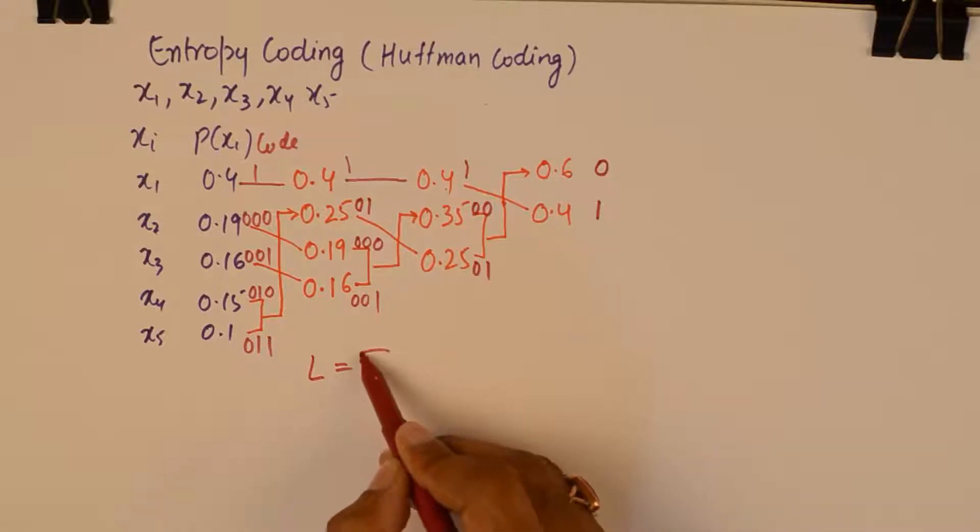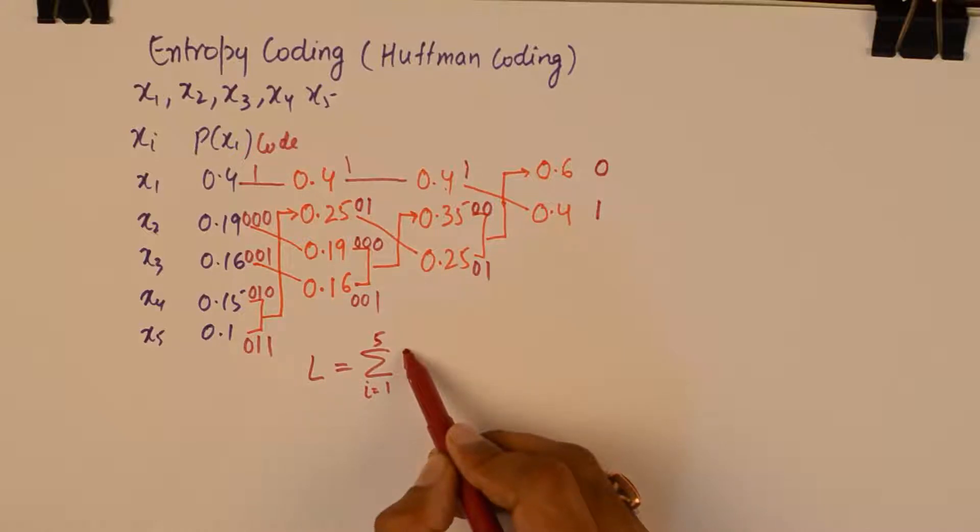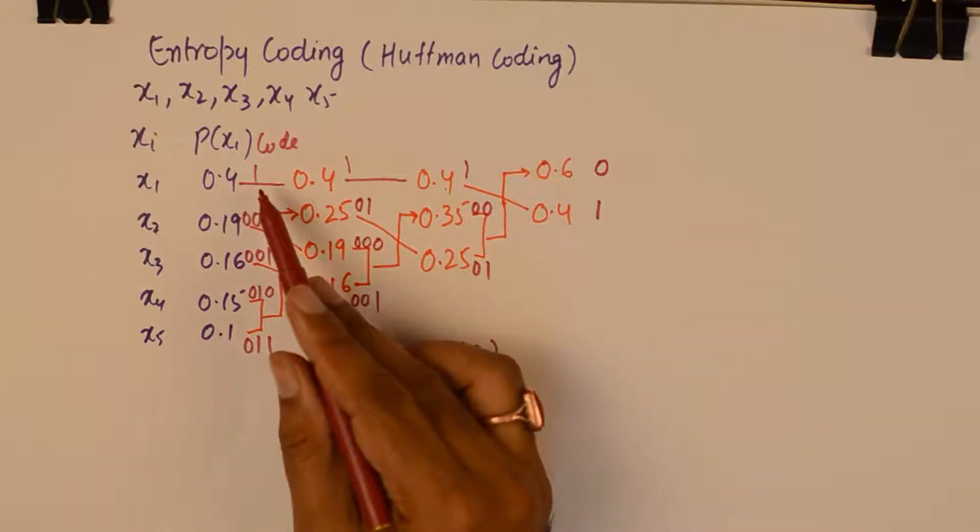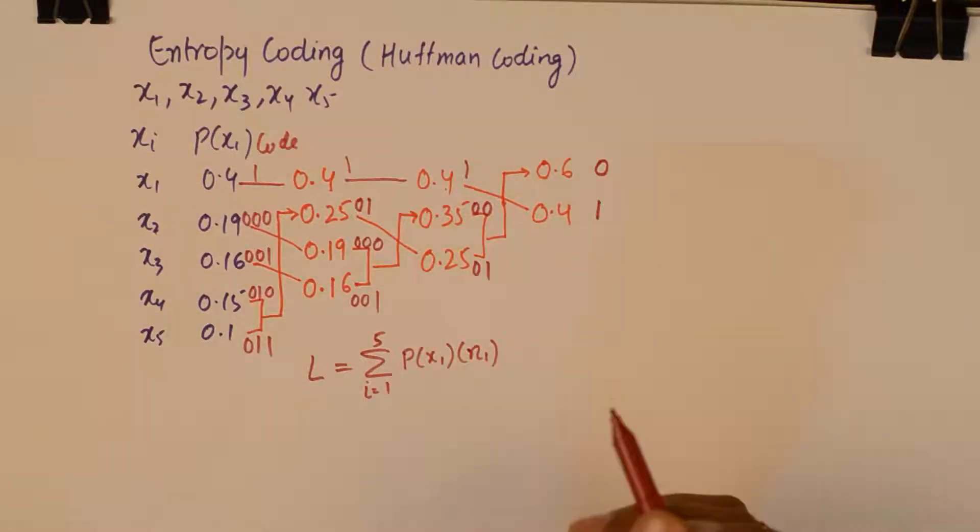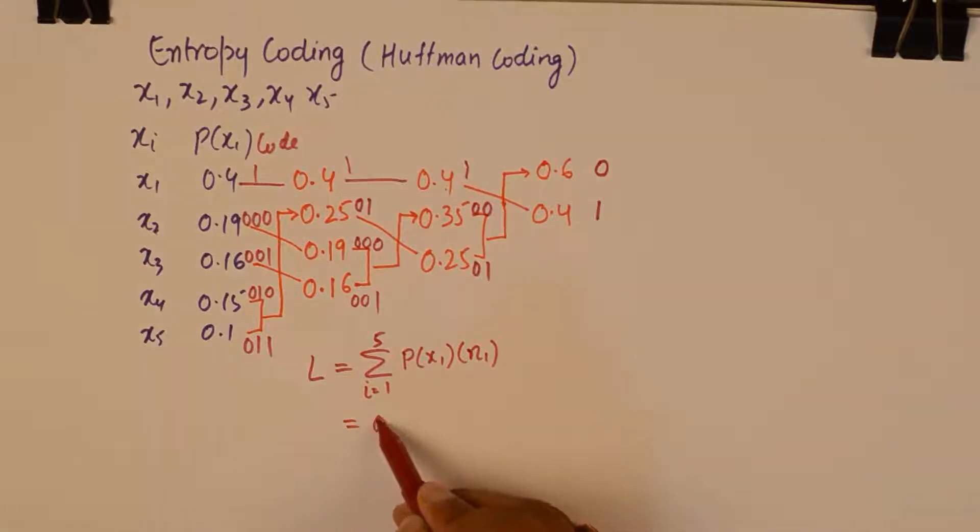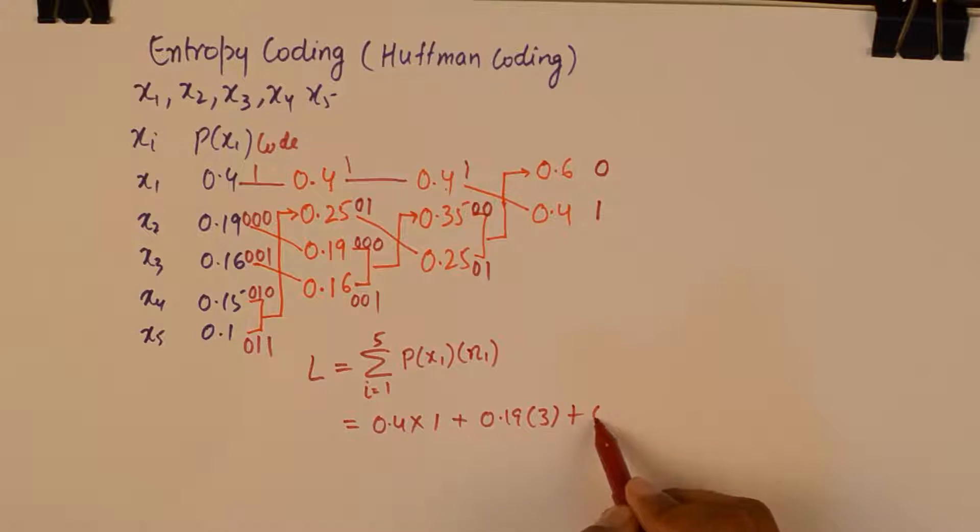And the average length is calculated just like the way we did in the case of Shannon-Fano. Summation from i=1 to 5 of P(xi) into ni where n is the number of bits in the code. And so what we get here is 0.4 into 1 plus 0.19 into 3 plus 0.16 into 3 plus 0.15 into 3 plus 0.1 into 3.